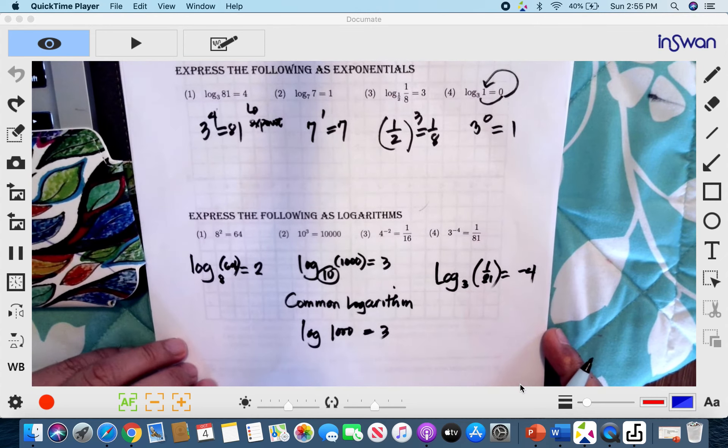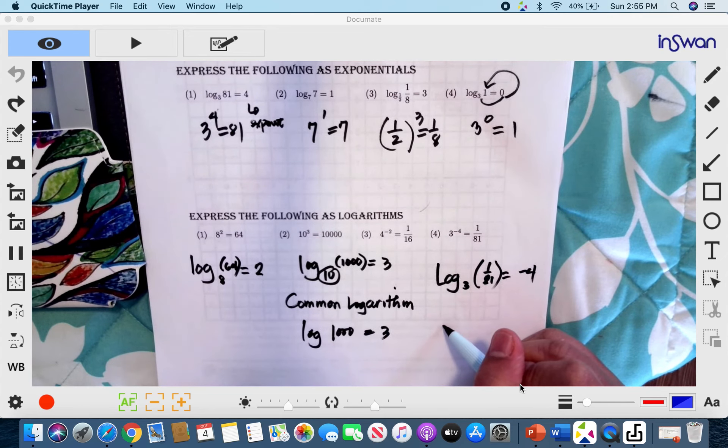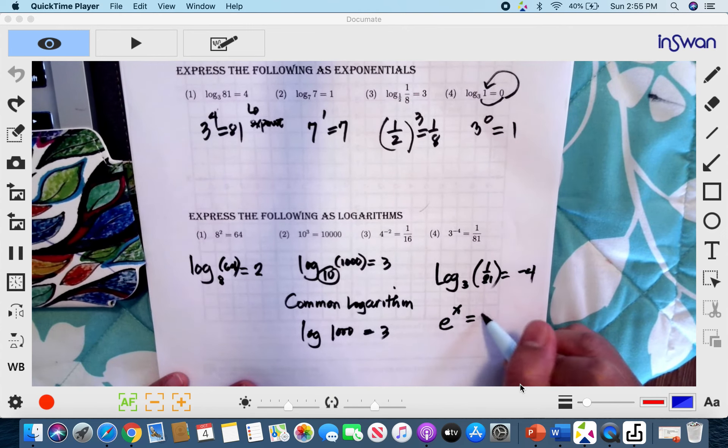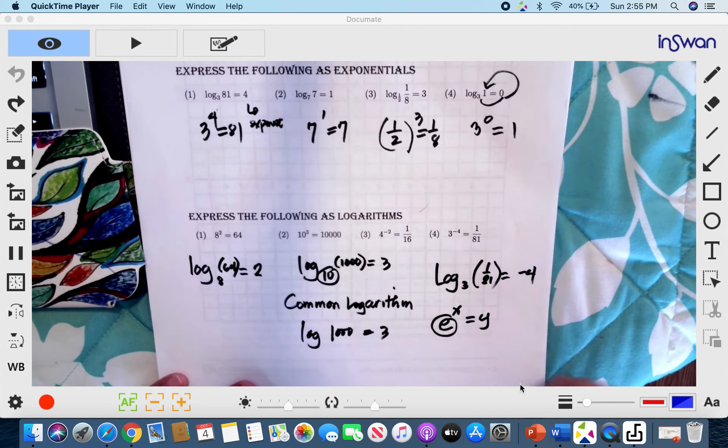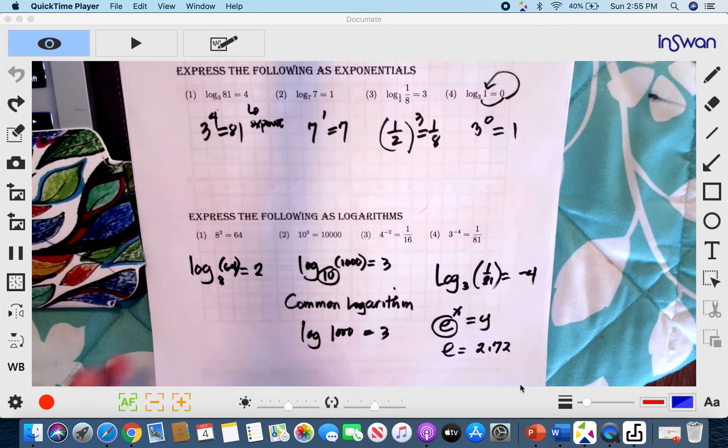Another concept of logarithm that's not really mentioned here is the constant e. Let's say I have e raised to x equals y. This e is an approximate value equal to 2.72. Use it with continuous compounding. Because there is a principle that, you remember,